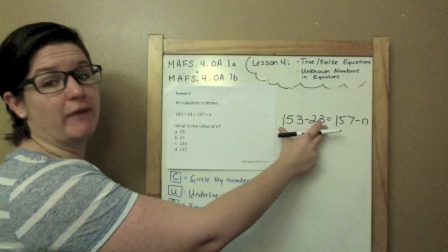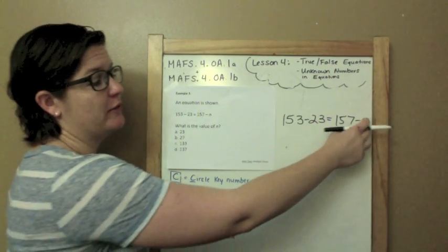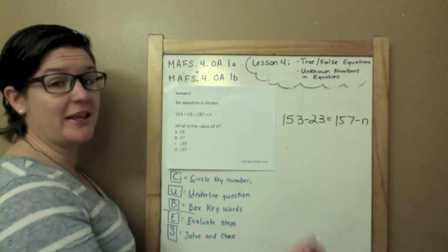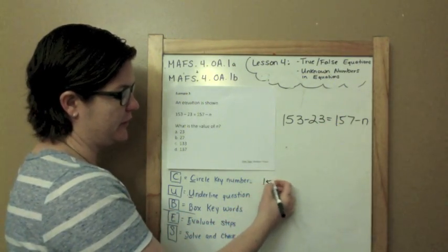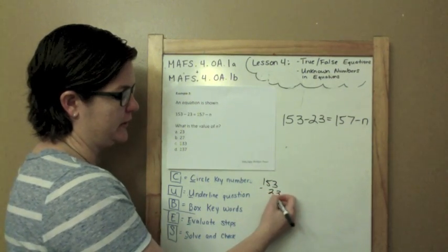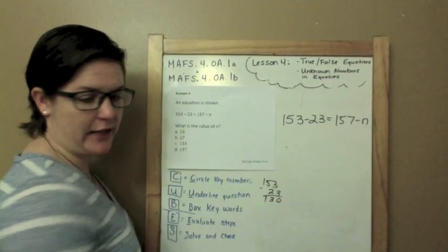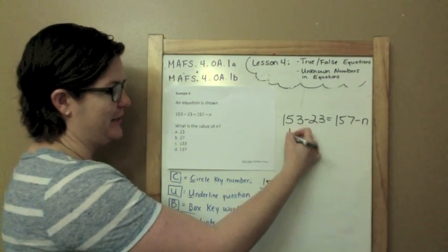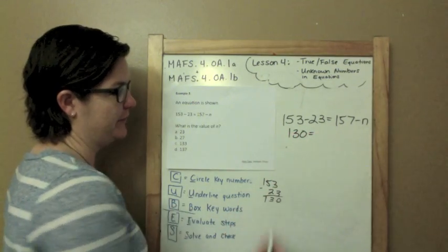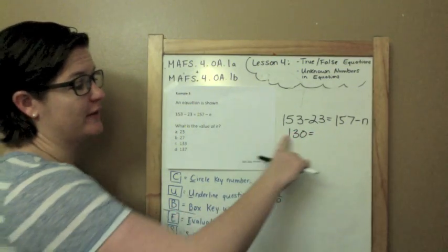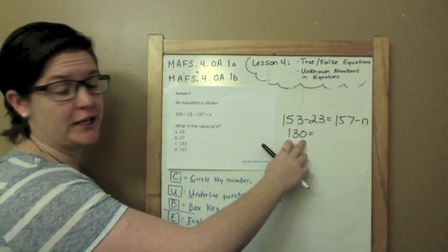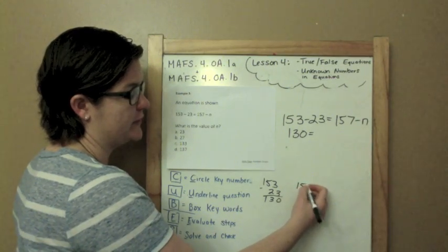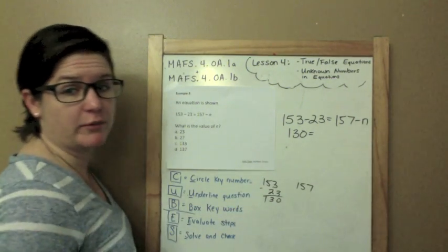Let me figure out what I know. I know I can solve this and figure out the value of the left side, which will help me figure out the value of the right side, which will help me figure out the value of n. Let's do this! 153 minus 23... So 130 is on the left side. So if the left side is 130, the right side needs to be 130.